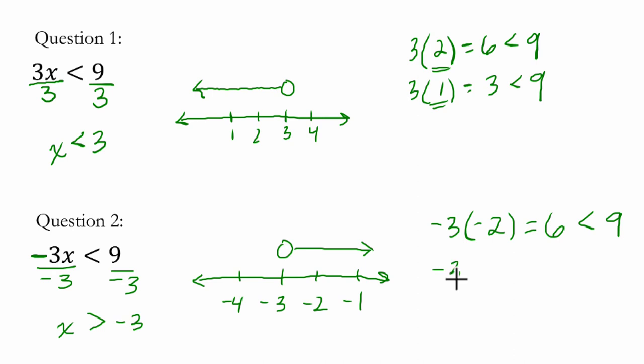And if we did negative 3 times negative 1, that's positive 3, and that's also less than 9. So any x value we pick larger than negative 3 will be true.